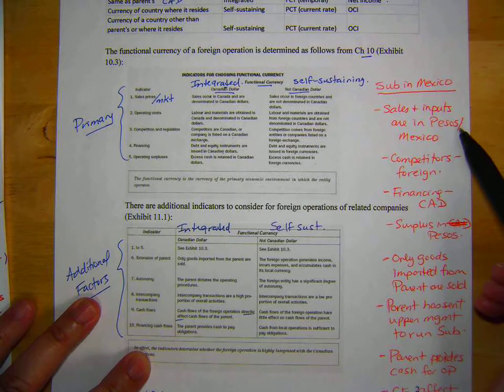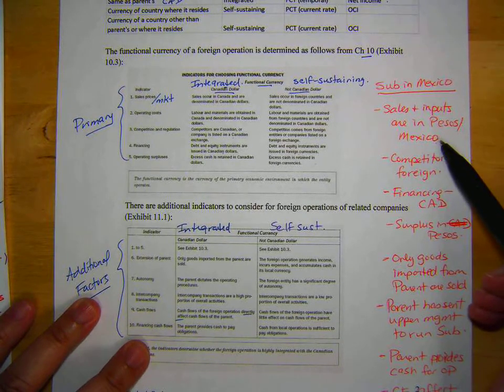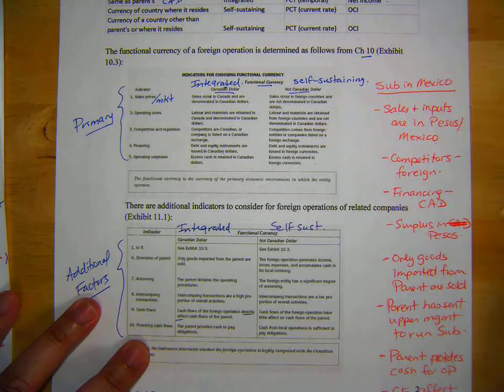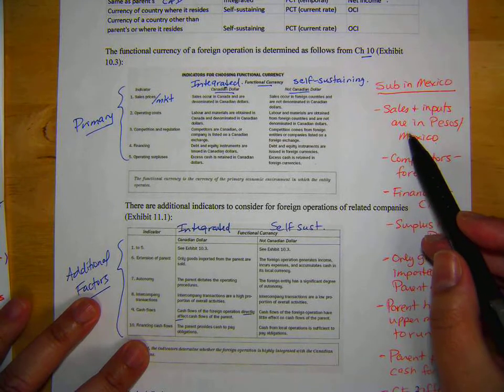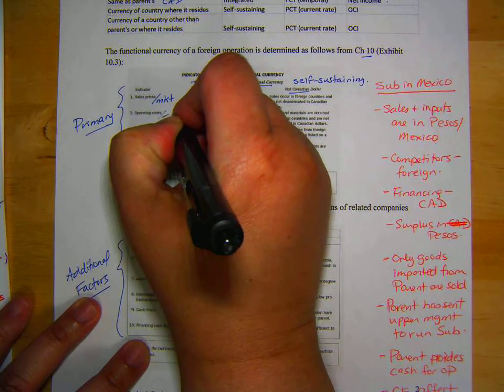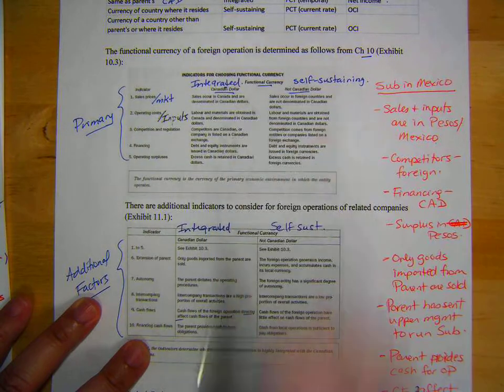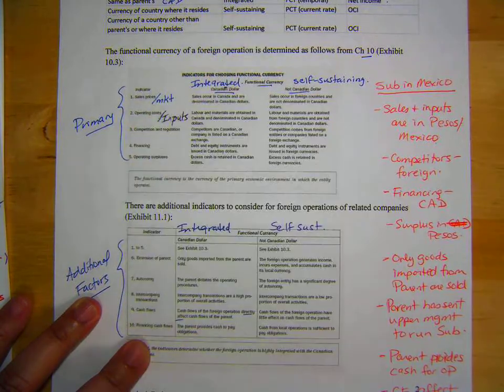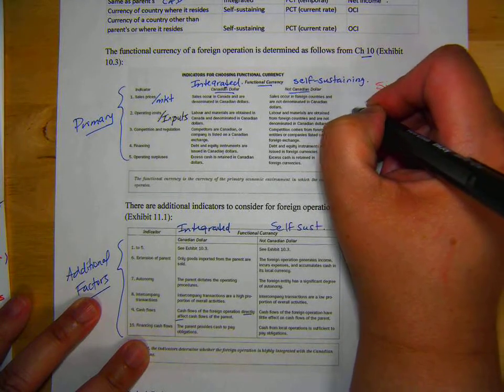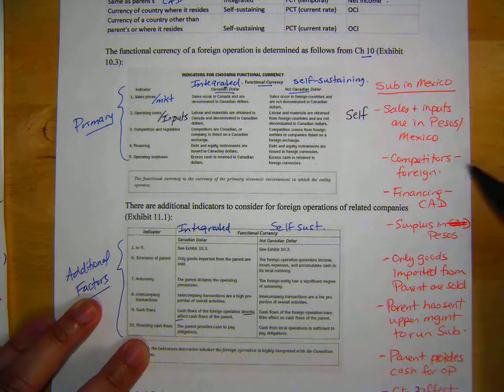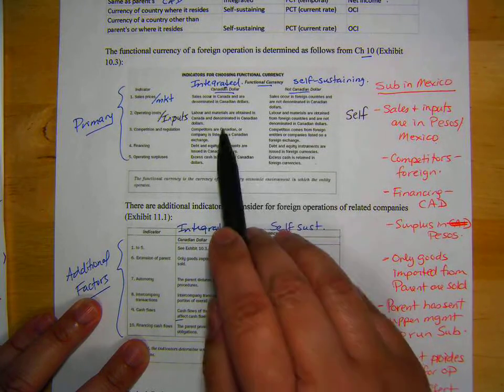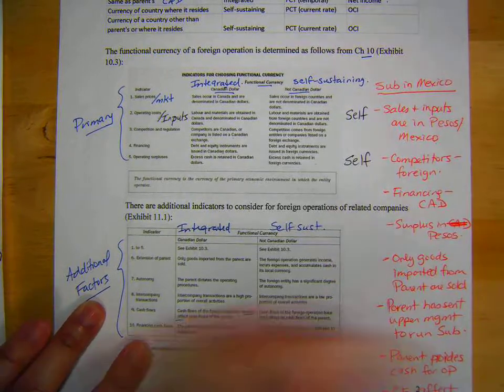So sales and inputs are in pesos or the inputs come from Mexico or all the sales are in Mexico. So which does that lead you to believe? So that's sales and operating costs because operating costs can also be thought of as inputs. That foreign country's or Mexican, that is going to be self-sustaining. All the competitors are foreign. So you look at competition, foreign entities rather than Canadian. So it's self-sustaining.